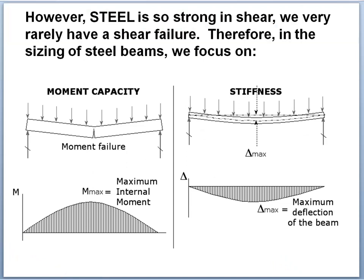We're sizing for moment capacity and stiffness in steel beams. We already went through a sizing procedure for stiffness, which is based on using the live load and is non-iterative because none of the calculations change once you've established the self-weight of the beam. The stiffness sizing also gives a baseline to start the moment capacity calculation, because moment capacity must include the beam self-weight. So we do stiffness sizing first, then use that output as the first input to moment capacity — the assumed self-weight from stiffness sizing is used in calculating moment capacity.